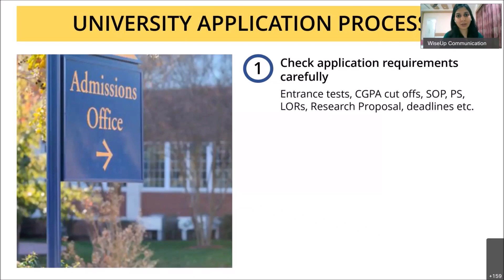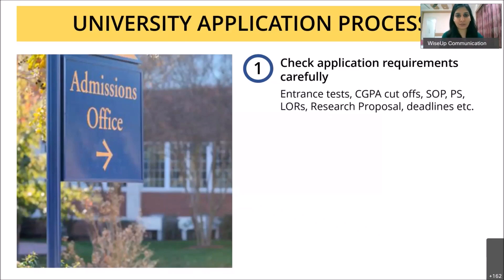While most universities require a Statement of Purpose, some also require a personal statement — especially if you're applying for a scholarship. Also check LOR requirements: on average universities require three letters of recommendation, some require two, very few require four. If you're going for research-based programs like a master's with thesis or PhD, you'll likely also need to prepare a research proposal.